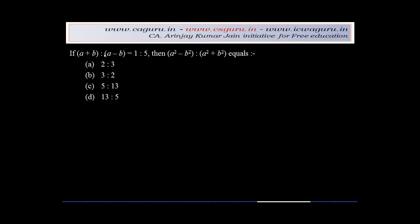If (a+b) is to (a-b) equals 1 is to 5, then (a²-b²) is to (a²+b²) equals what? Now you're given that (a+b)...